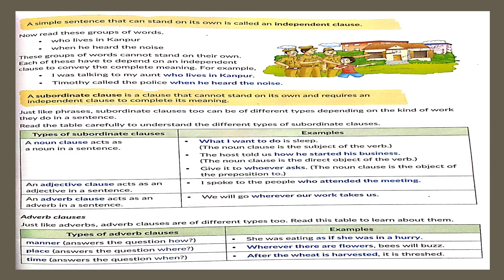She was eating as if she was in a hurry — how was she eating? As if she was in a hurry. An adverb clause of manner always answers the question 'how.' Wherever there are flowers, bees will buzz — where will the bees buzz? Wherever there are flowers. Hence this is an adverb clause of place. After the wheat is harvested, it is threshed — when is the wheat threshed? After the wheat is harvested. The adverb clause of time answers the question 'when.'